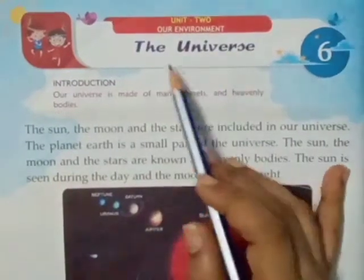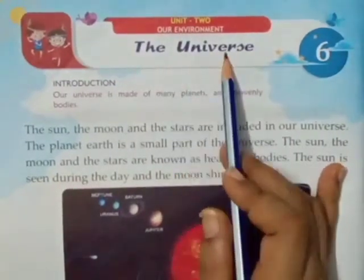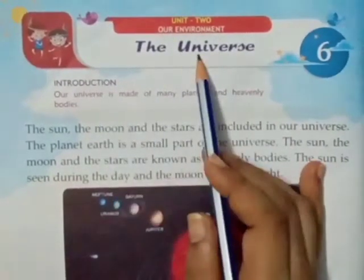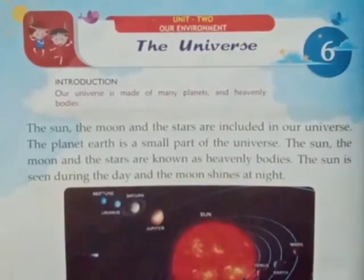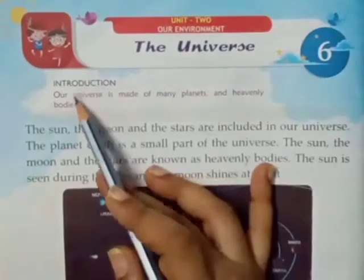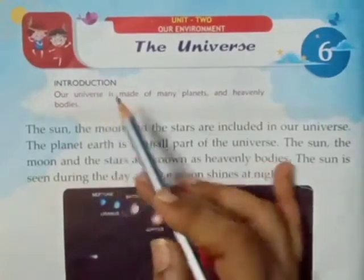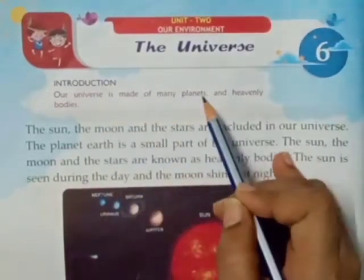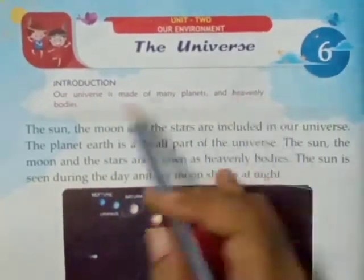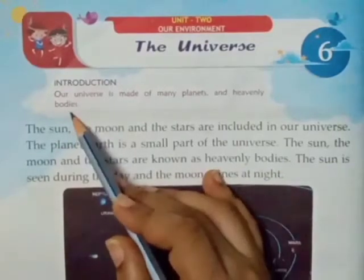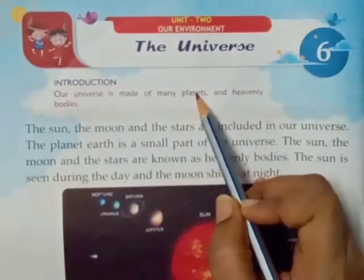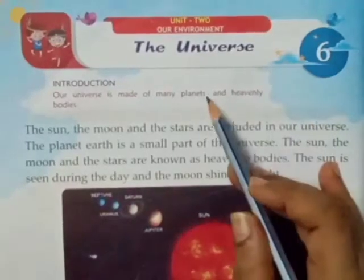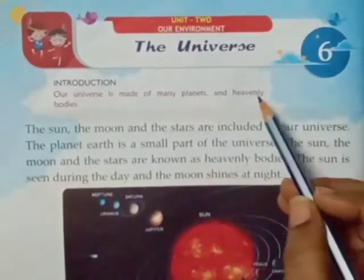Yes, dear children, The Universe. Universe kya hota hai? Our universe is made of many planets and heavenly bodies. Planets hootay hai, like our Earth. Hai na, hamaarii prithvi eek planet hai.